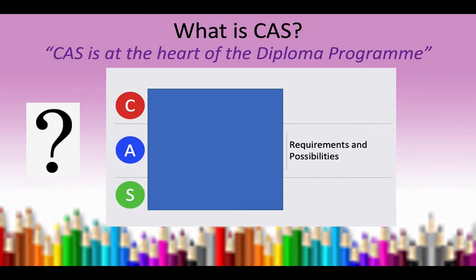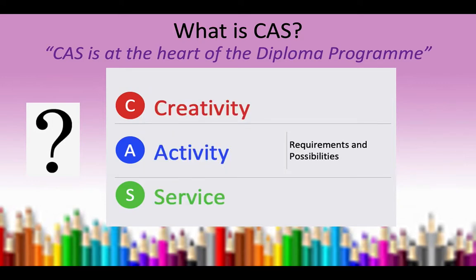First, a reminder of what CAS actually stands for — and surprisingly, sometimes people don't get the letters correct. CAS stands for Creativity, Activity, and Service. These are the three components the IB wants students to engage with as they approach experiences or the project, stepping out of the confines of the academic curriculum to do things beyond their subject package. Each one has a specific set of requirements for how it is recognized.